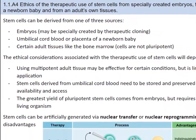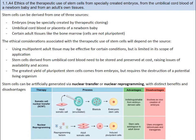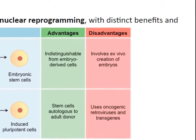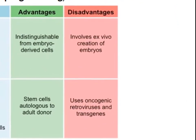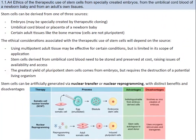The ethical considerations depend on the source. Using multipotent adult tissue may be effective for certain conditions but is limited in its scope of application. Stem cells derived from umbilical cord blood need to be stored and preserved at a cost, raising issues of availability and access. The greatest yield of pluripotent stem cells comes from embryos, but requires the destruction of a potential living organism. Scientists can also potentially artificially generate stem cells via nuclear transfer or nuclear reprogramming, with distinct benefits and disadvantages.